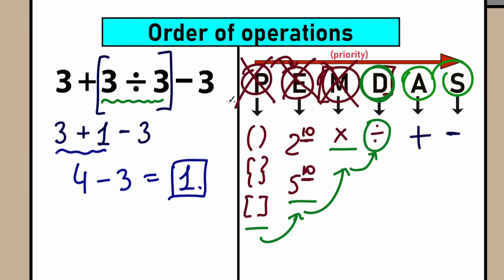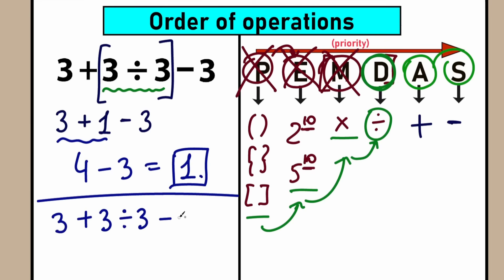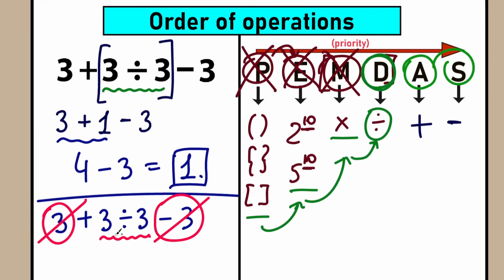But right now I'm going to show you a really interesting trick. We have 3 plus 3 divided by 3 minus 3. If you look closely, we have 3 in the beginning and minus 3 at the end. In algebra, if we leave the 3 divided by 3 aside for a moment, we have 3 and minus 3 — which cancel each other out, giving 0. So we can cancel these two and we're left with 3 divided by 3, which equals 1. The same answer as before, but with one really great algebraic trick.